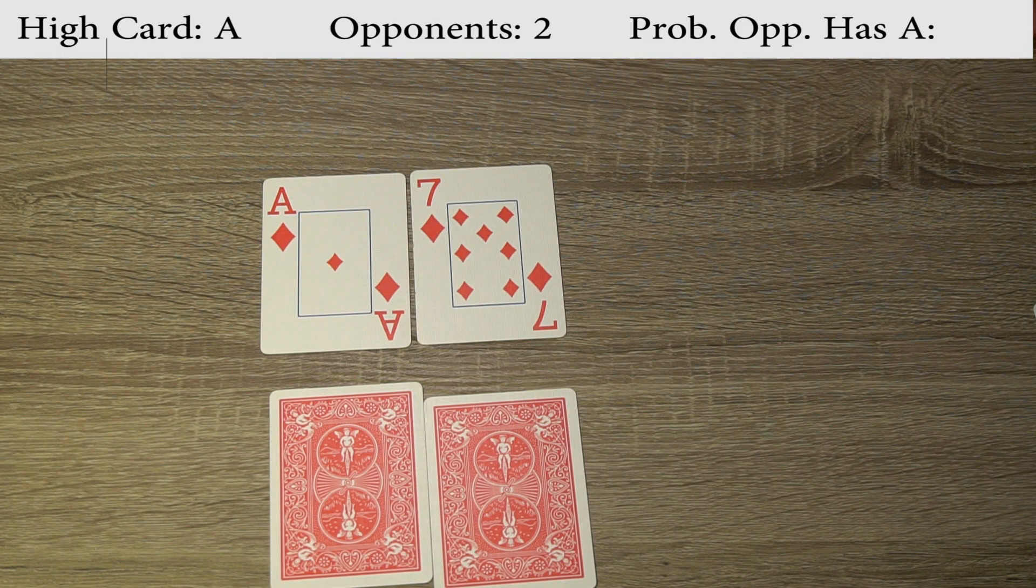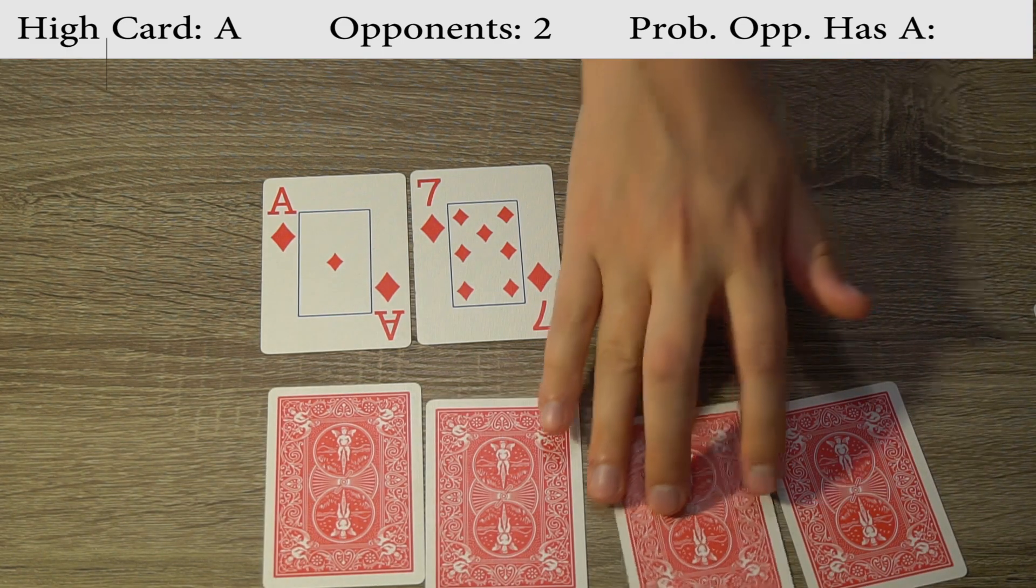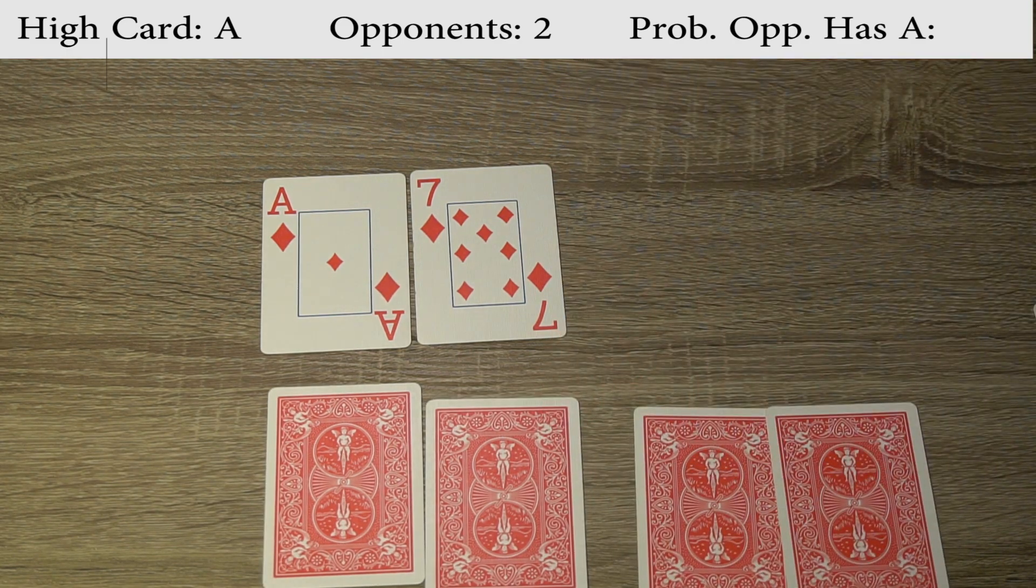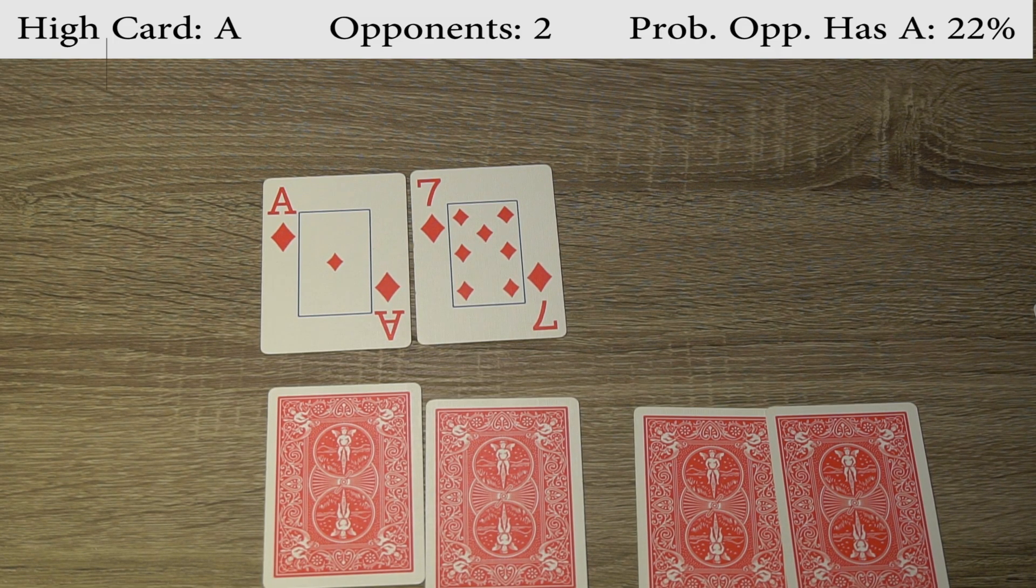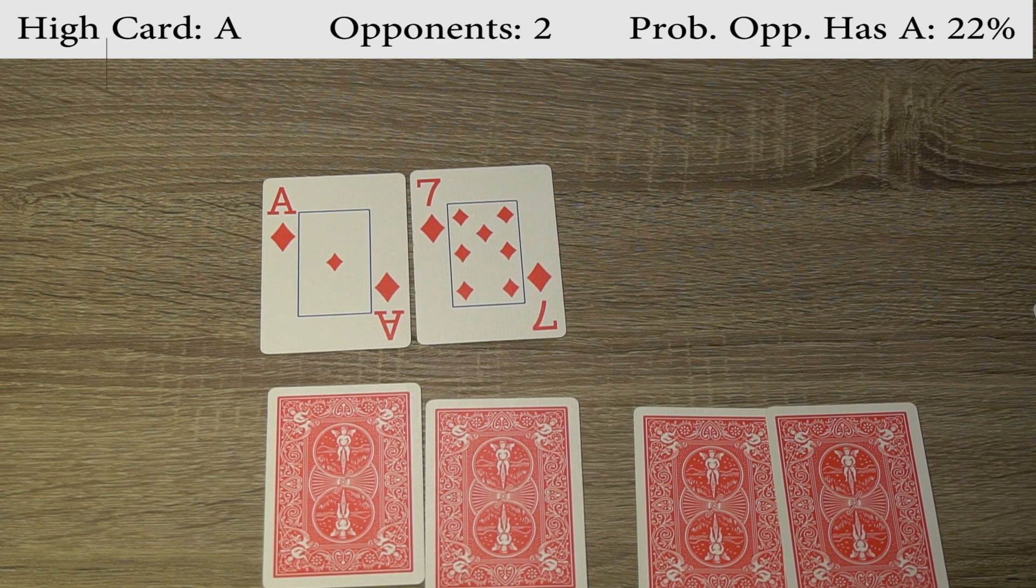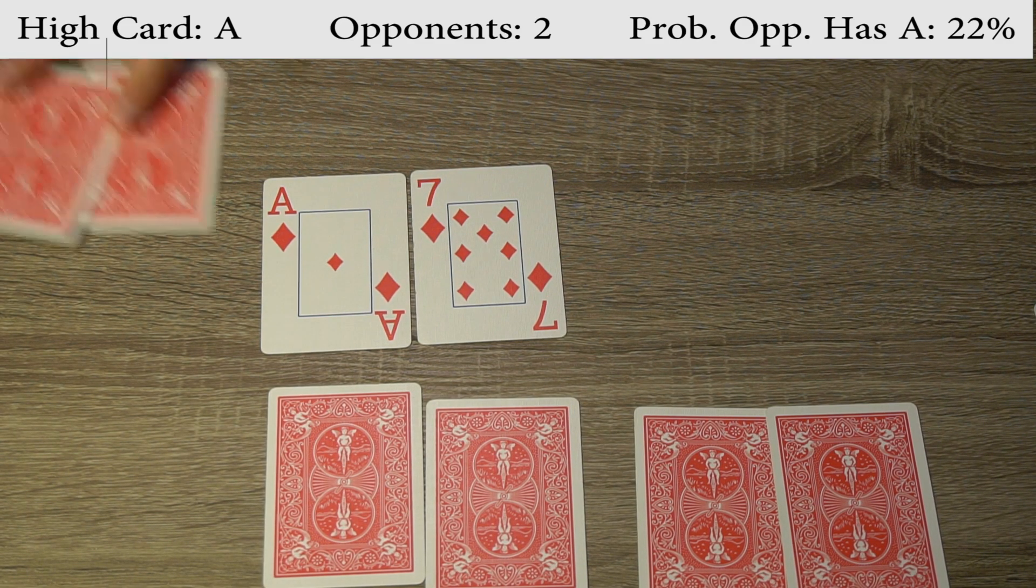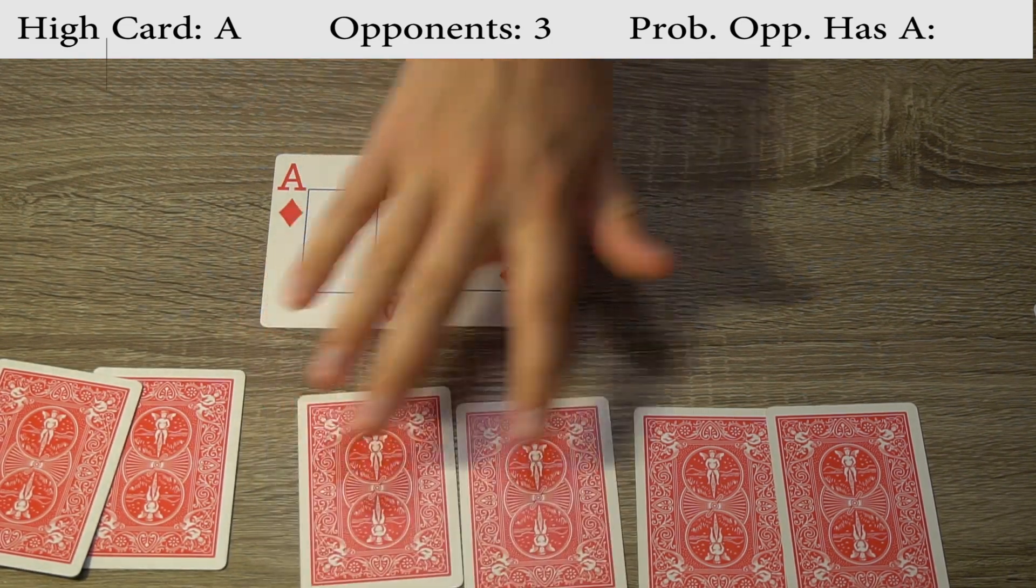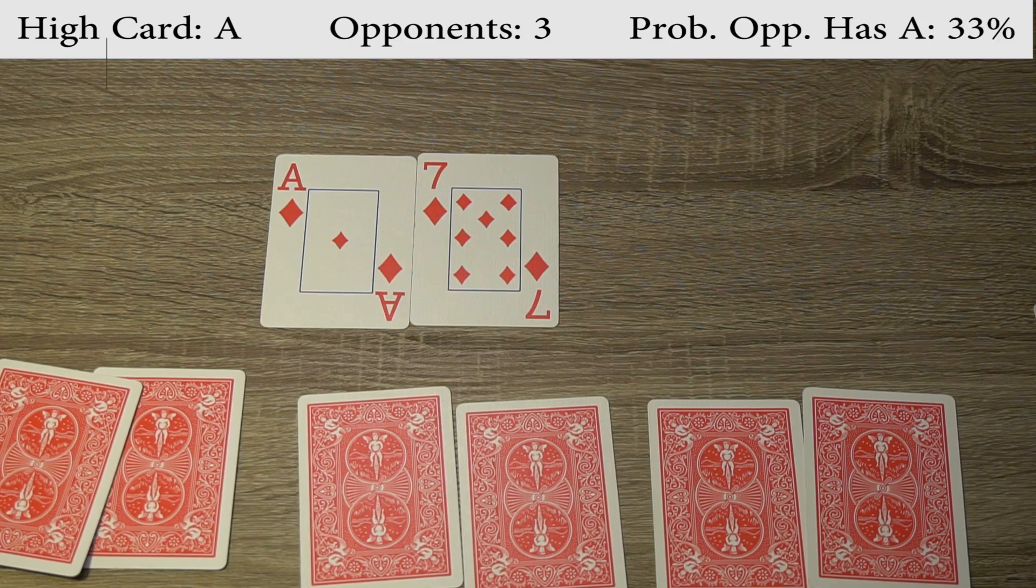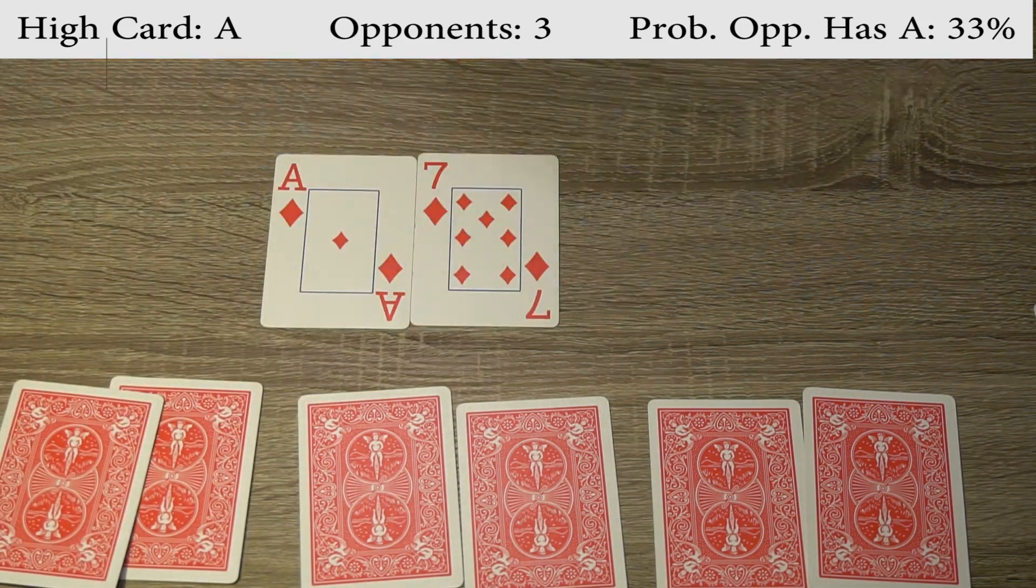When we increase that to two opponents, we get about 22% of the time one of those other people will have an ace. And this is kind of an interesting trend for the opponent also having an ace. So when we go to three opponents, we get to about 33% of the time someone else will have an ace.